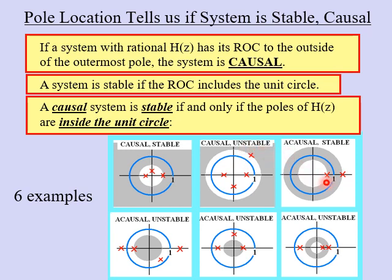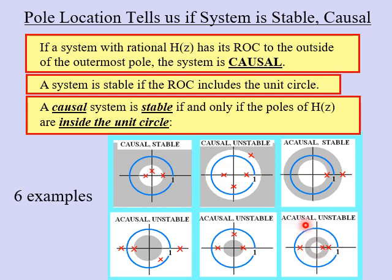In the third example, the ROC is between two poles — not outside the outermost pole — so the system is acausal. However, the ROC does include the unit circle, so the system is stable. In the fourth example, the ROC is inside the innermost pole, meaning it is acausal, and it does not include the unit circle, so the system is also unstable. In the fifth example, the ROC is an inner circle — acausal — and does not include the unit circle, so it is unstable. In the sixth example, the ROC is an annulus between two poles — acausal — and does not include the unit circle, so the system is unstable.